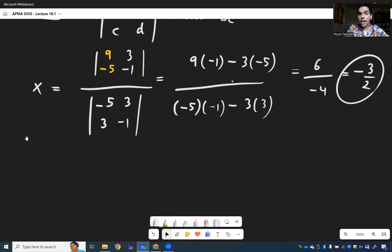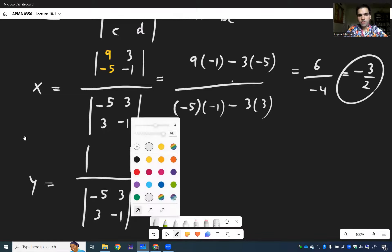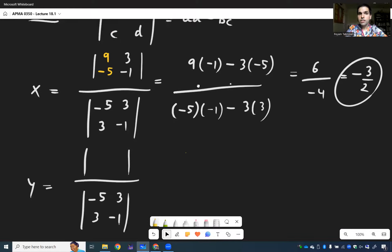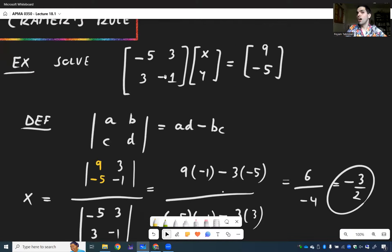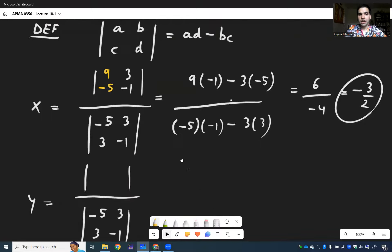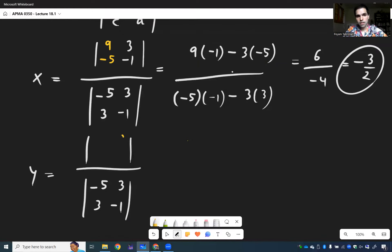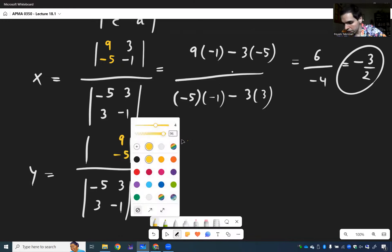What about for y? So it has the same form. So it's still two determinants, where the bottom is the original determinant. -5, 3, 3, -1. But this time, you replace the second column by 9, -5. So instead of putting 3, -1, you replace that by 9, -5. And then I think the other one is -5.